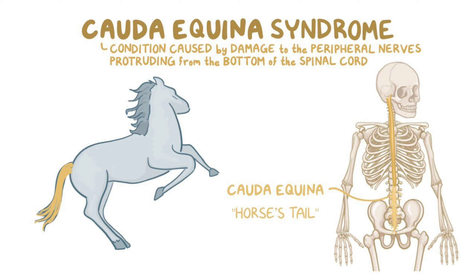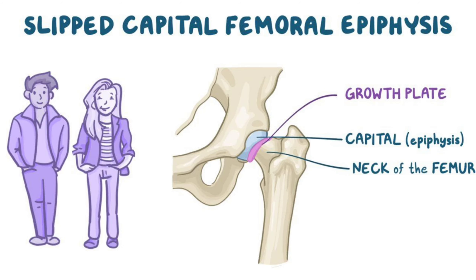There is no major difference between sciatica and prolapsed disc or herniated disc in terms of features and treatment. Sciatica can take a very short time to get treatment but herniated disc or disc prolapse takes more time. Keep in mind: along with the painkiller in sciatica you have to give amitriptyline or pregabalin as well.